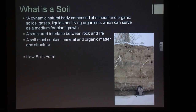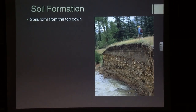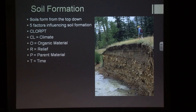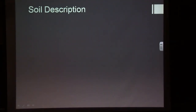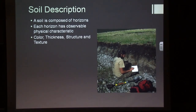We're going to look at how soils form, how soils are described, and buried soils and their importance to our study. Soils form from the top down, so depth can give a general idea of age. There are five factors influencing soil formation described by the acronym CLORPT: climate, organic material, relief, parent material, and time. Within our study we're really looking at changes in soil development over time — what we call a chronosequence. Soils are composed of horizons: visible changes in soil characteristics based on color, thickness, structure, and texture.